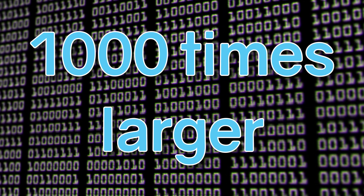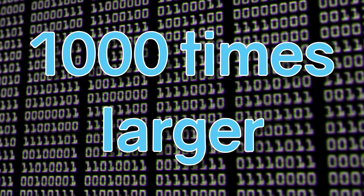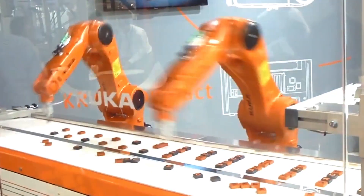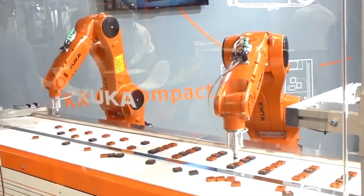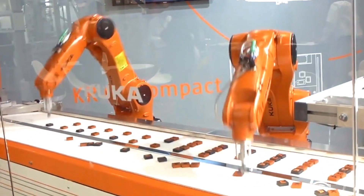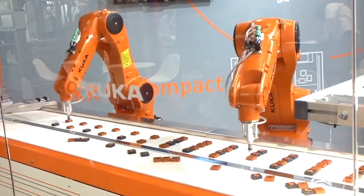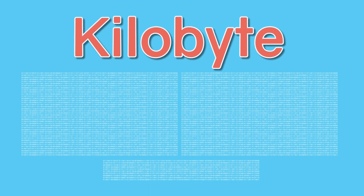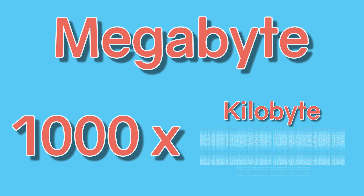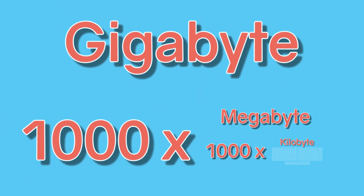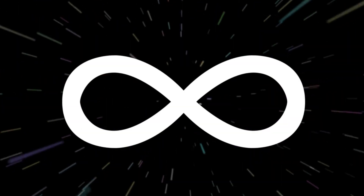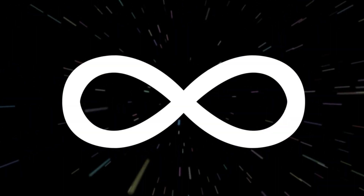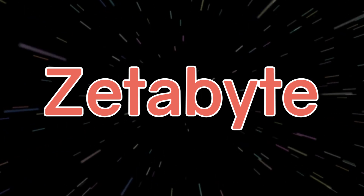There are some exceptions, and neither are used uniformly throughout most industries, but for the sake of this video I'm going to stick with the decimal measurement. So a megabyte is a thousand times a kilobyte, and a gigabyte is a thousand times that. These values can go on forever, but for our purposes we can stop at a zettabyte.